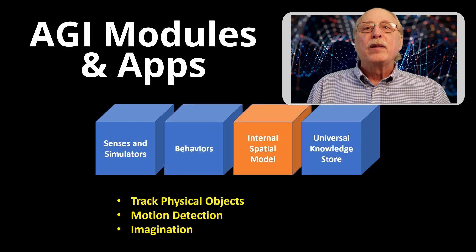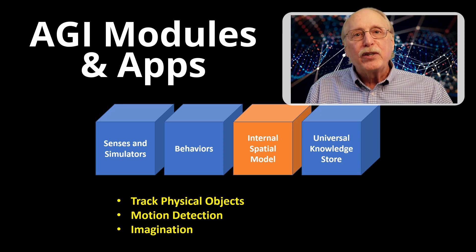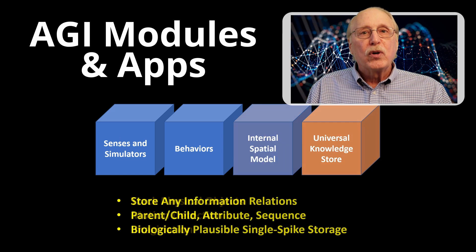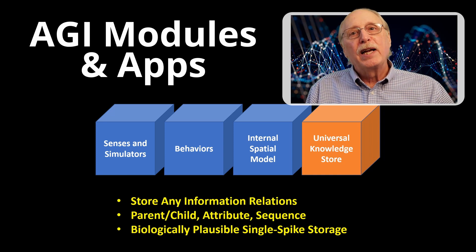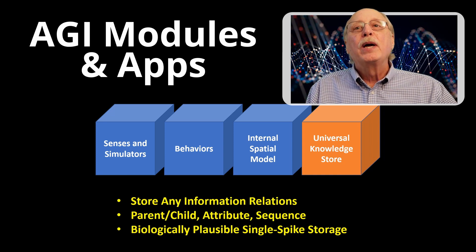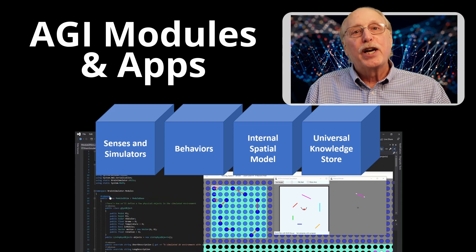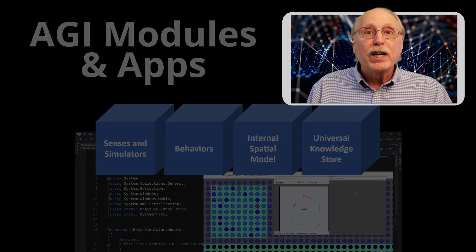Internally, there are modules for maintaining an internal mental model and the universal knowledge store which can merge multi-sensory input. Modules are written in a high-level language like C-sharp and are combined with neural signals to create AGI applications which implement some facet of general intelligence.